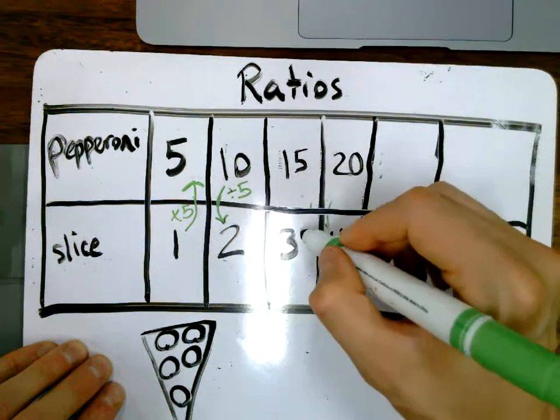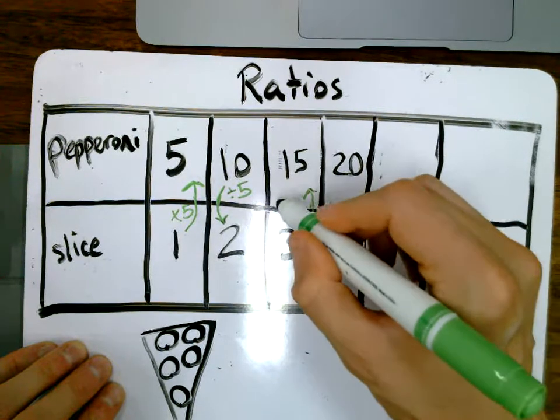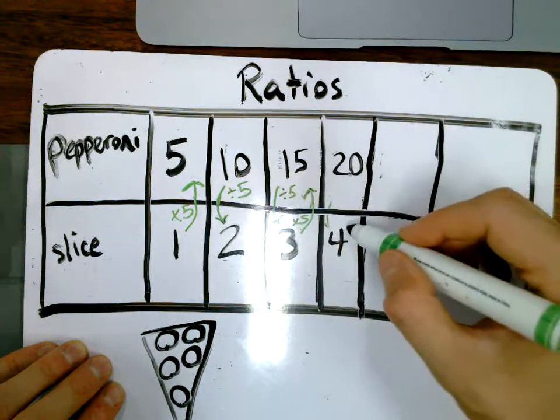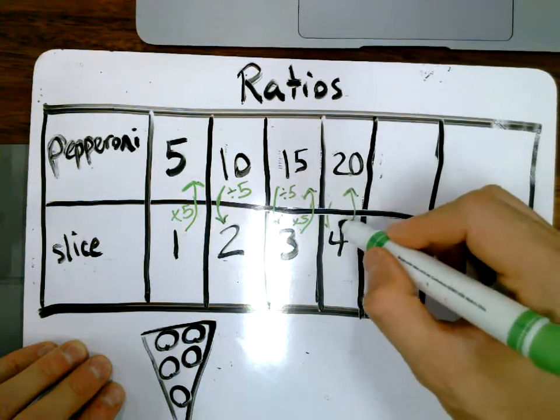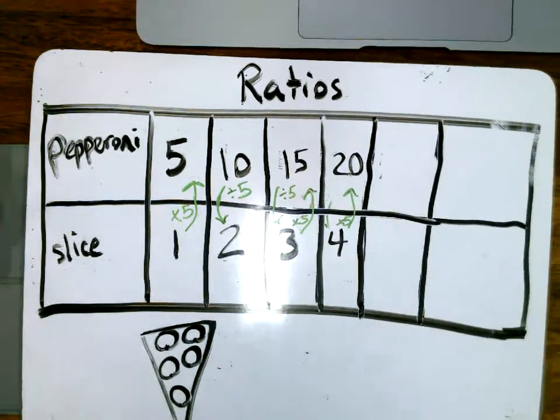So multiply by five to get up and divide by five to get back down. Multiply by five to get up. Okay, so let's say now that we have...